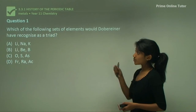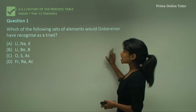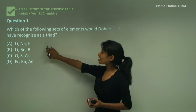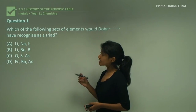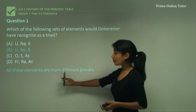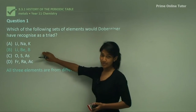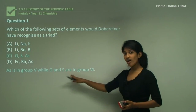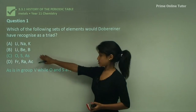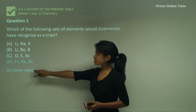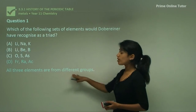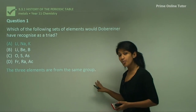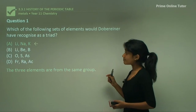Question 1 is a multiple choice question: which of the following sets of elements would Döbereiner have recognized as a triad? Remember, all elements in a triad come from the same group. Option B — lithium, beryllium and boron — are from different groups, so it's incorrect. Option C — oxygen, sulfur and arsenic — arsenic is in group 5 while oxygen and sulfur are in group 6, so arsenic disrupts the triad. Option D — barium, radium and actinium — all from different groups, also incorrect. Option A — lithium, sodium and potassium — all are group 1 elements, so A is the answer.